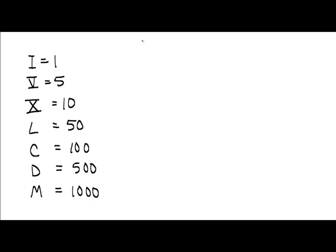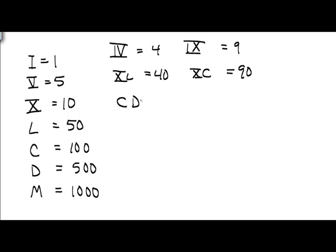If they are out of order, it means subtraction and the only allowed ones are, you can have IV is a 4, IX is a 9, XL is 40, XC is 90, CD is 400, and CM is 900.